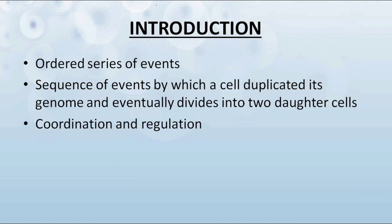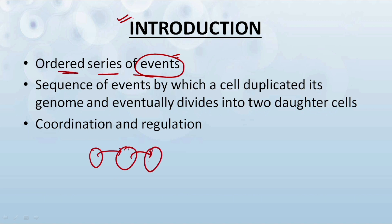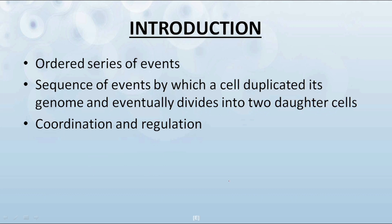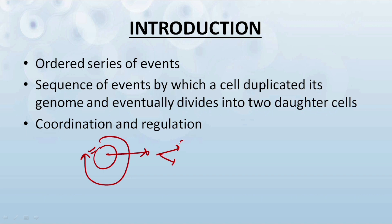If we want to define what the cell cycle is all about: a cell cycle is an ordered series of events — some events that occur in an ordered manner. It is the sequence of events by which a cell duplicates its genome and eventually divides into two daughter cells. The cell undergoes this ordered sequence of events because the cell has to increase its number, and that is the reason why the complete process of cell cycle and cell division occurs.